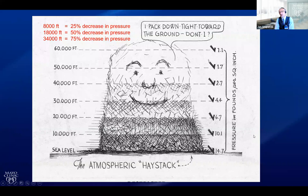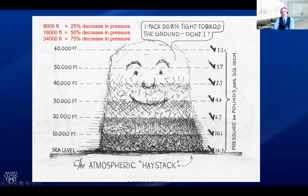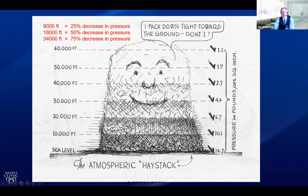I'd like you to remember this slide because it really brings home how quickly and how big the changes are in pressure when you go up in the atmosphere. The biggest changes happen in the lowermost portions of the atmosphere. Per 10,000 feet you get a significant pressure change, whereas going from 50,000 to 60,000 feet is a minuscule change. At 8,000 feet you have a 25% decrease in ambient pressure; 18,000 feet is 50%; and at 34,000 feet a 75% decrease. We regularly deal with 25 to 30% decreases in ambient pressure and the resulting physiologic changes.